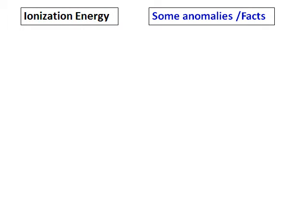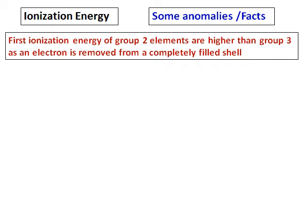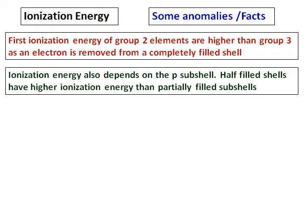Let's discuss some anomalous trends. The first ionization energy of group 2 elements is higher than that of group 3 elements, because you are removing an electron from a completely filled shell. In general, if you go with the trend, ionization energy increases in a period — so this is an anomaly.